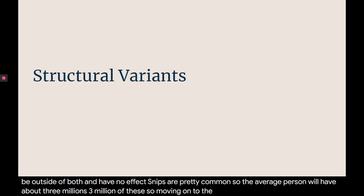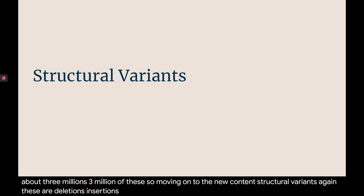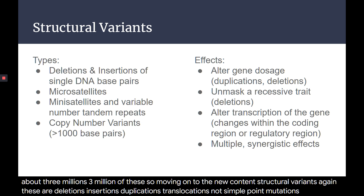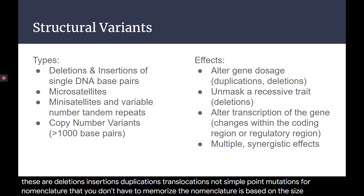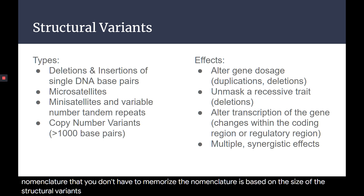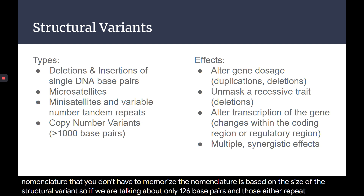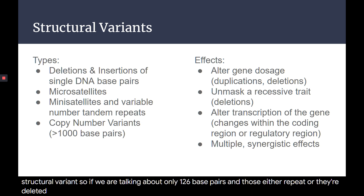Moving on to the new content: structural variants. Again, these are deletions, insertions, duplications, translocations — not simple point mutations. There's different nomenclature based on the size of the structural variant. If we are talking about only one to six base pairs, and those either repeat or they're deleted, then that's a microsatellite.